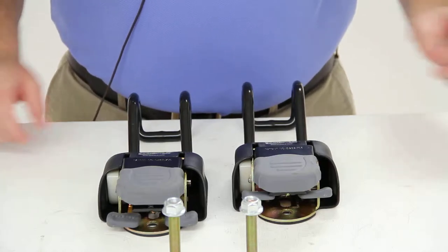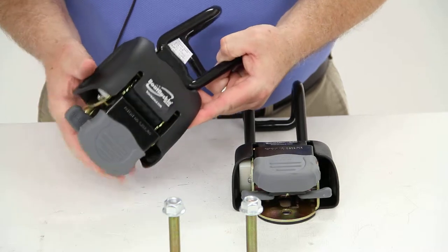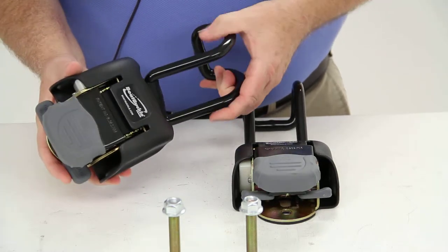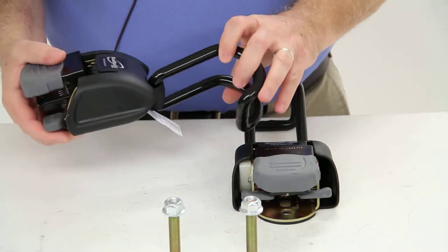Today we're going to review part number IMF14221. These are the boat buckle G2 retractable ratcheting gunwale tie-down straps.